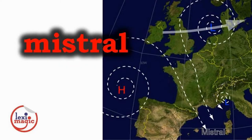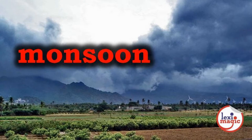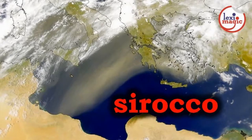Mistral is a strong cold wind that blows from certain regions of France into the Mediterranean. Monsoon means seasonal winds blowing in the Indian Ocean that bring heavy rains to the Indian subcontinent. Sirocco is a hot dusty wind blowing from North Africa into the Mediterranean and Southern Europe.